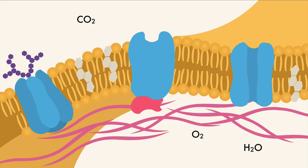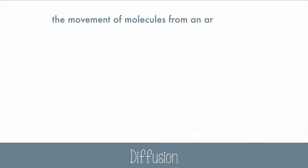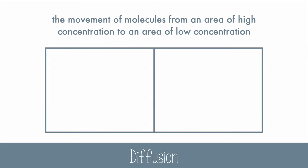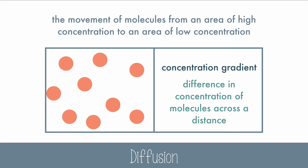So let's see why this movement even happens. The movement of molecules from an area of high concentration to an area of low concentration is called diffusion. A concentration gradient is a difference in the concentration of molecules across a distance. Diffusion goes from high to low areas of concentration.